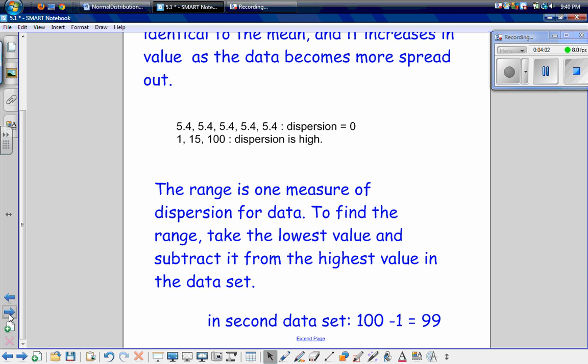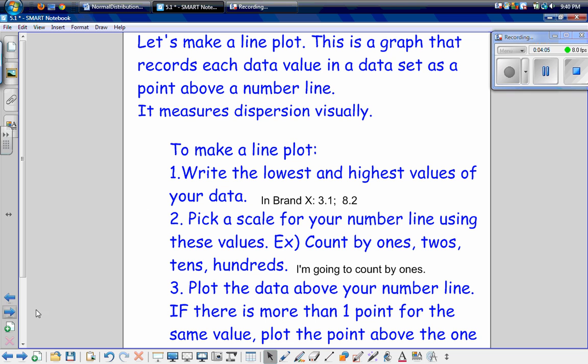One way that we can picture dispersion is called a line plot. How do we make a line plot? A line plot is a graph that records each data value in a data set as a point above a number line. So it measures dispersion visually. That's what a line plot does.